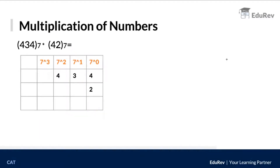Now let's look at multiplication of numbers. We have 434 to the base 7 multiplied by 42 to the base 7. I have divided this process into three parts. First, I'll multiply 434 by 2, then 434 by 4, and finally add the partial products. Let's start by multiplying 434 by 2.